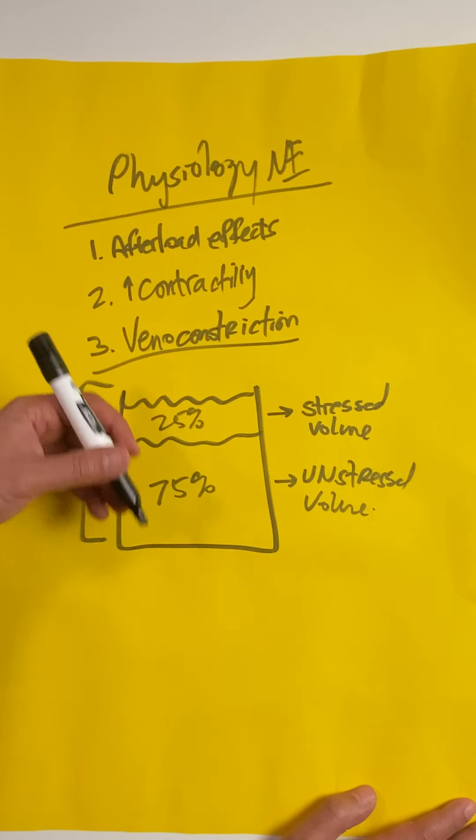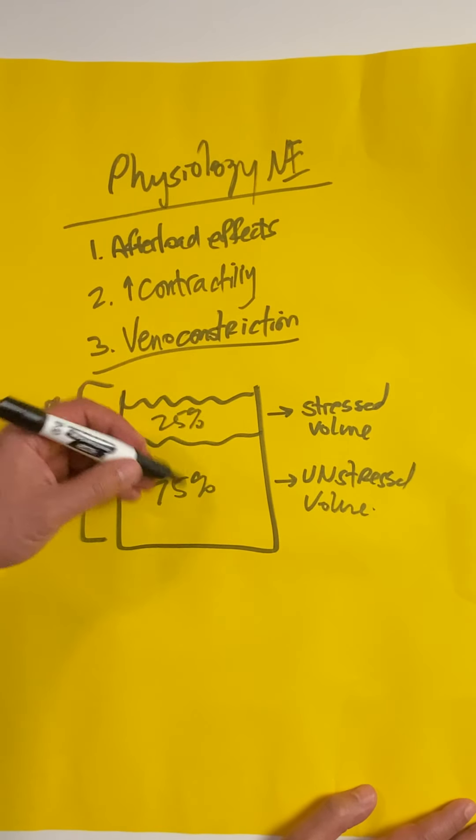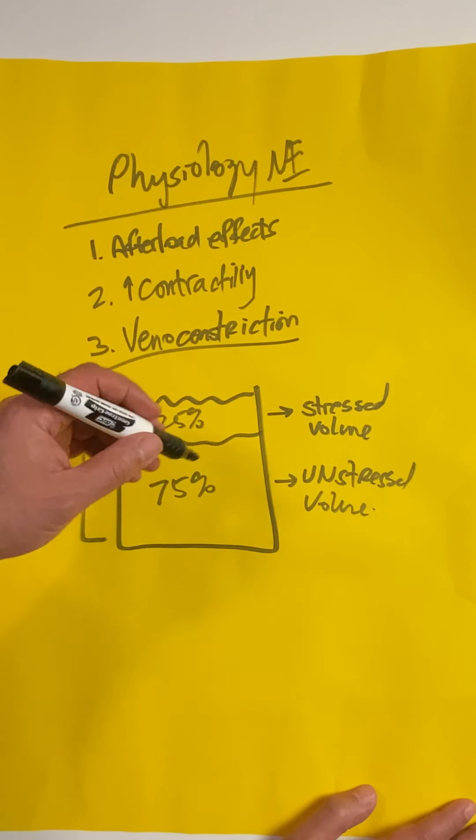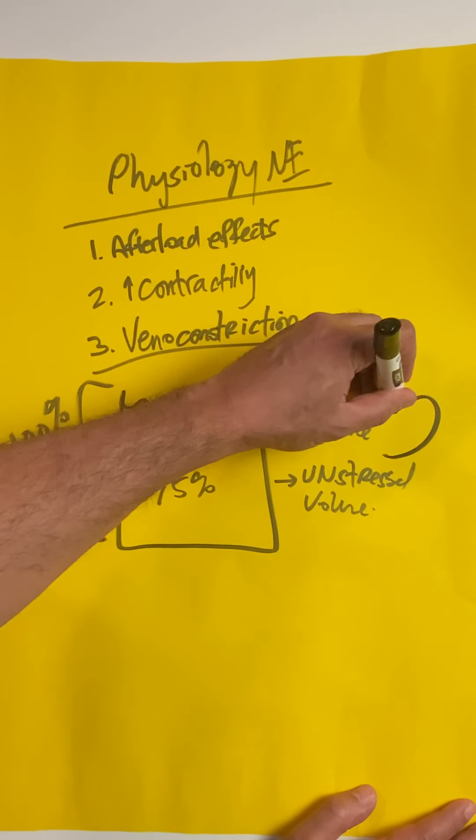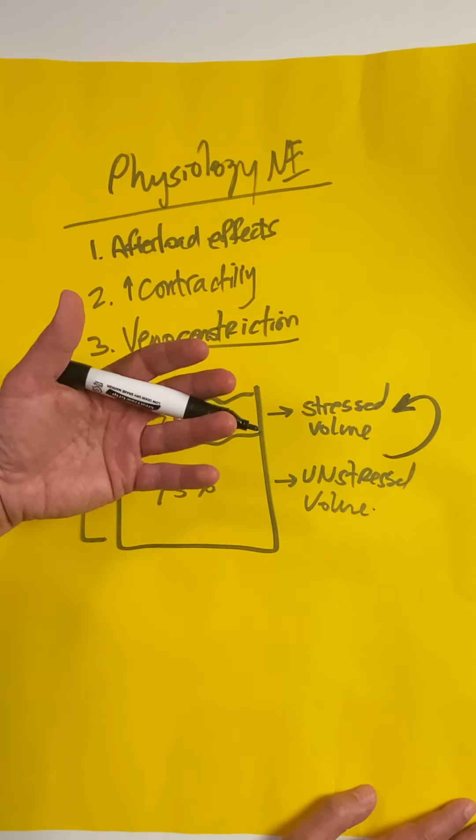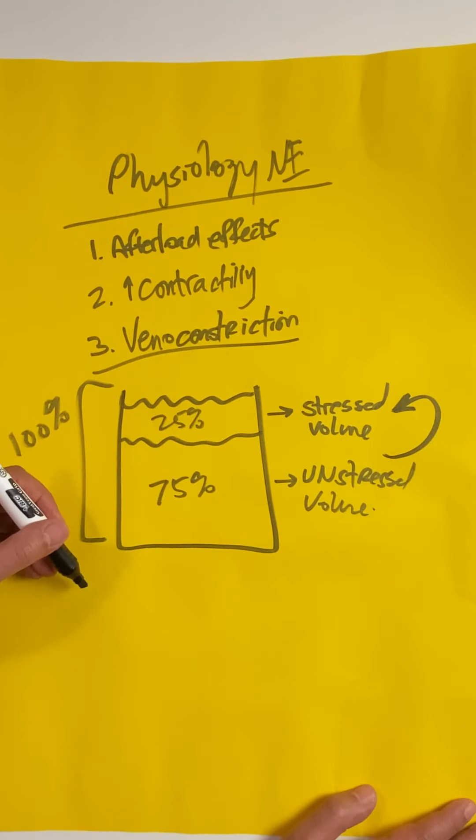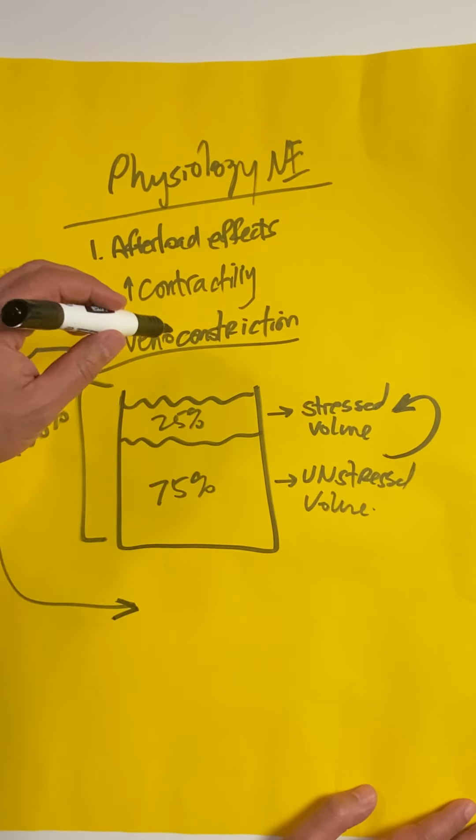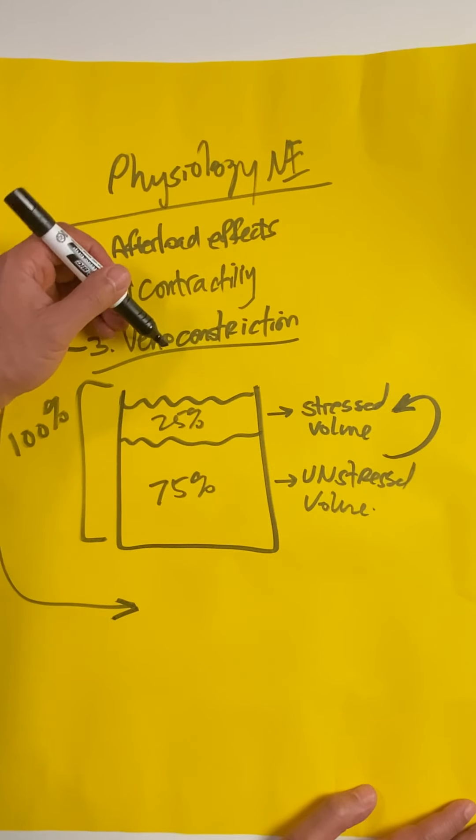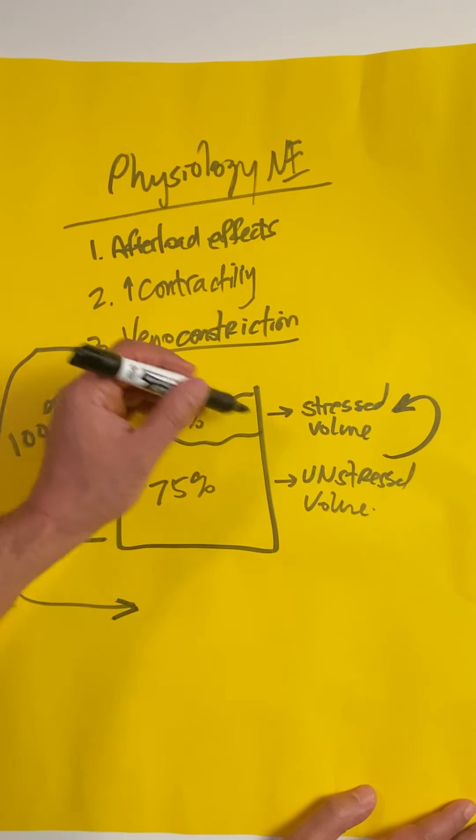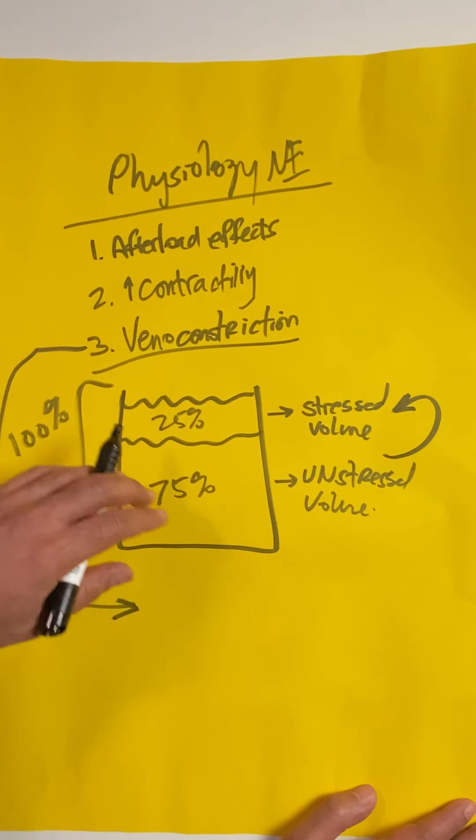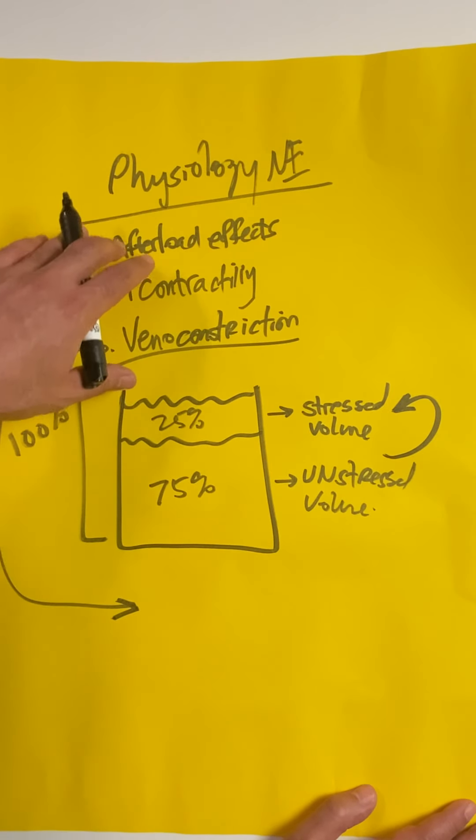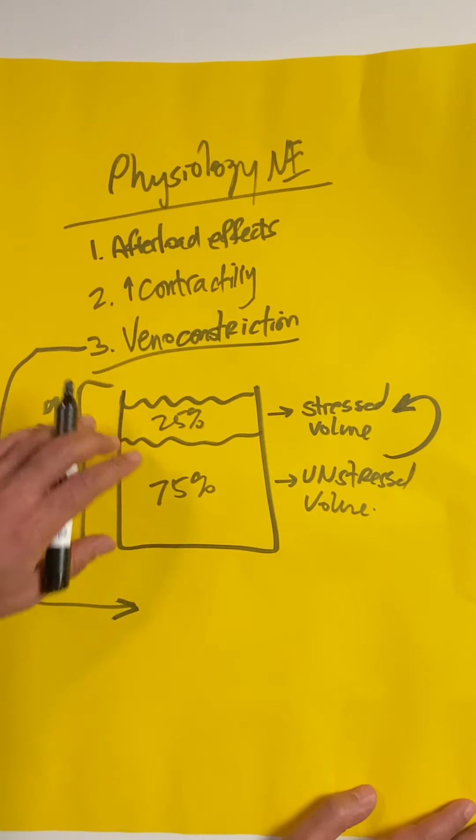When you become hypovolemic or need more blood volume, you venoconstrict and bring some of this unstressed volume into the stressed volume to participate in circulation, to increase stroke volume and cardiac output. If you have a patient who's sick and needs more intravascular volume, it'd be really smart if you could get the unstressed volume back in the game. That's what norepinephrine does. By increasing venoconstriction, it brings some of the unstressed volume back into the stressed volume. That, my friends, is one of the biggest reasons norepinephrine is such a good vasopressor for critically ill patients.